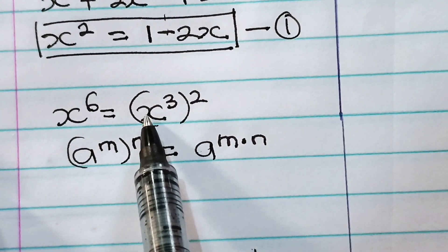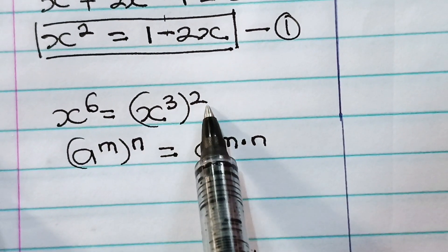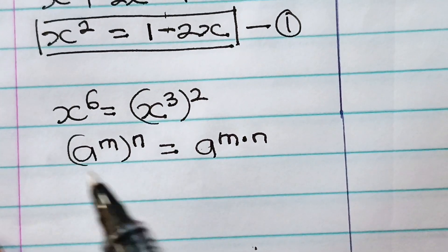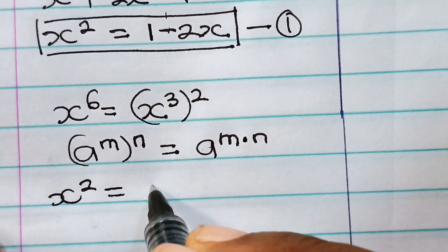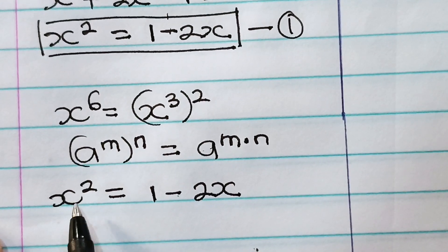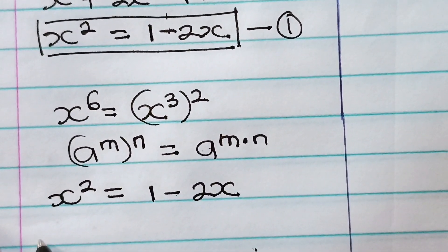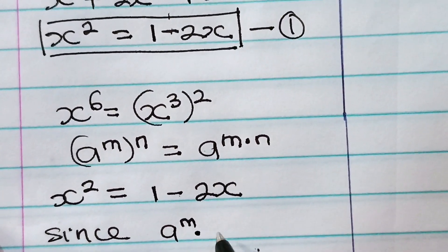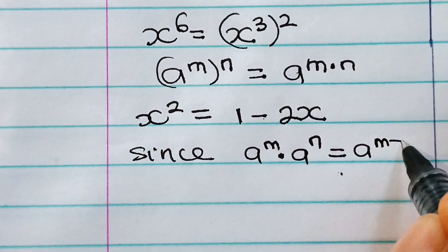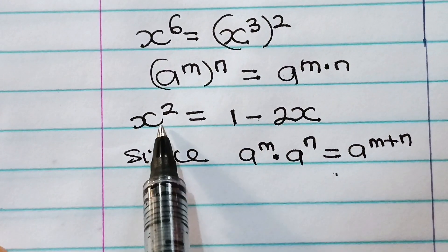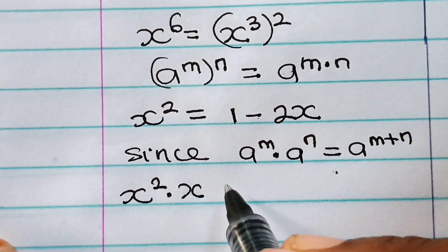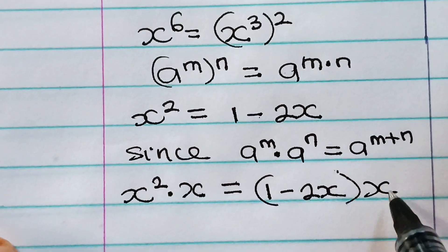We got our x squared equal to 1 minus 2x. If I want to get x to the power of 3, all I need to do is multiply this by x to the power of 1. Since a to the power of m multiplied by a to the power of n, using the law of indices, is equal to a to the power of m plus n. So if I multiply both sides of this equation by x, I'll get x to the power of 3.